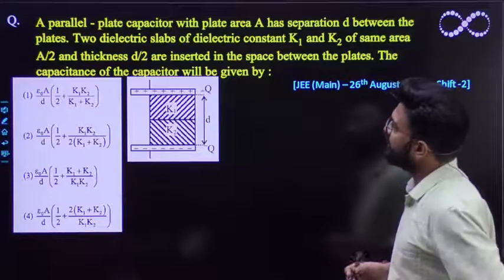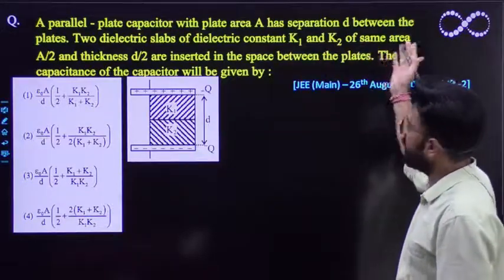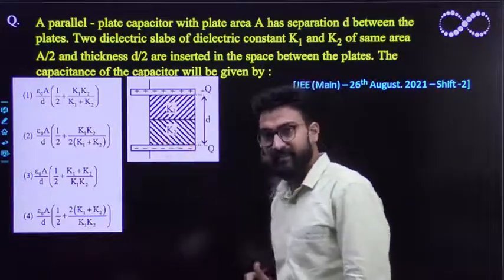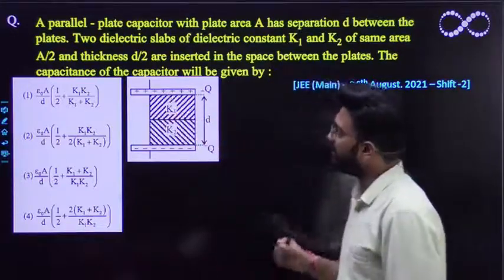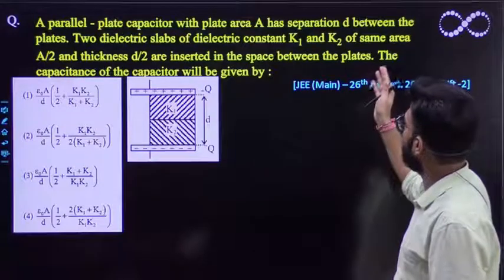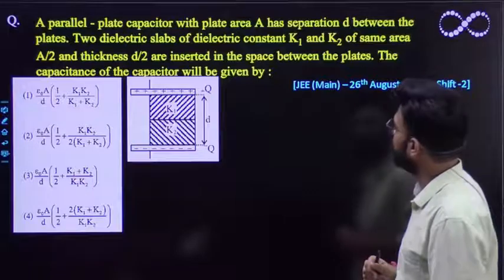Question says a parallel plate capacitor with plate area A has a separation D between the plates. So as you can see aapko parallel plate capacitor given hai, jis ka separation D hai and plate area hai capital A. Two dielectric slabs of constant K1 and K2 of the same area A by 2 and thickness D by 2 are inserted in the space between the plates.